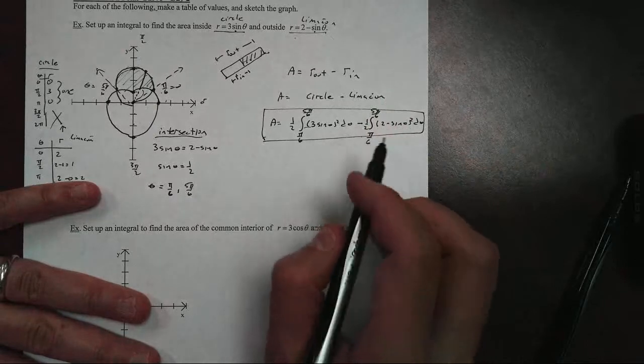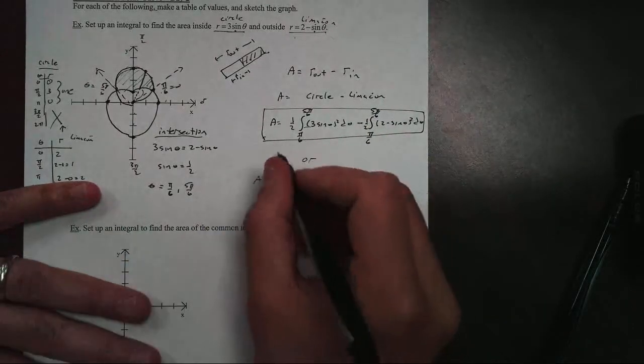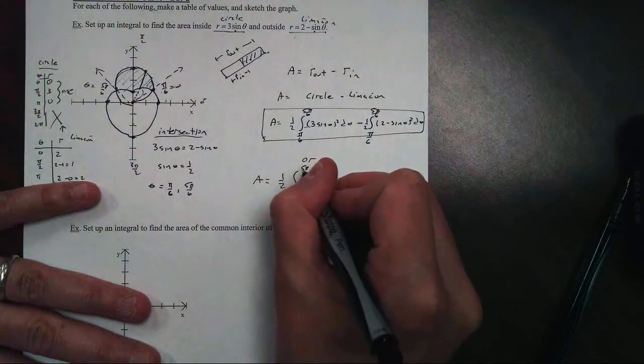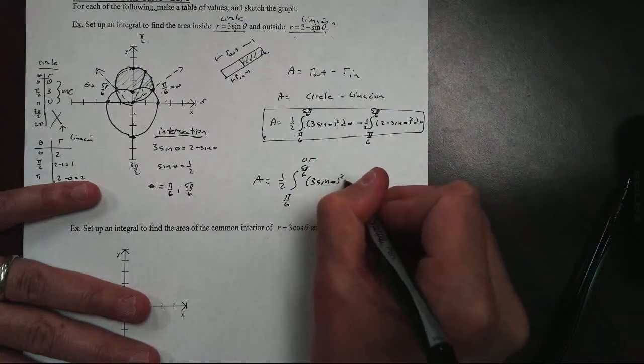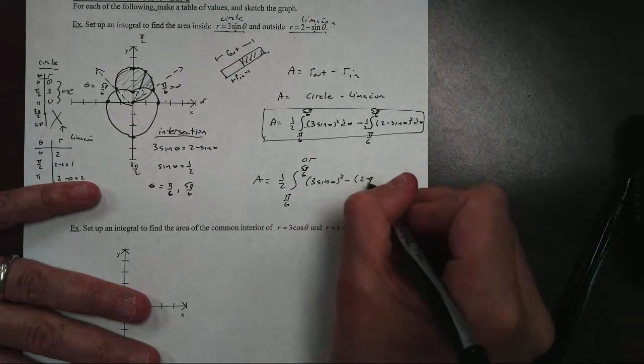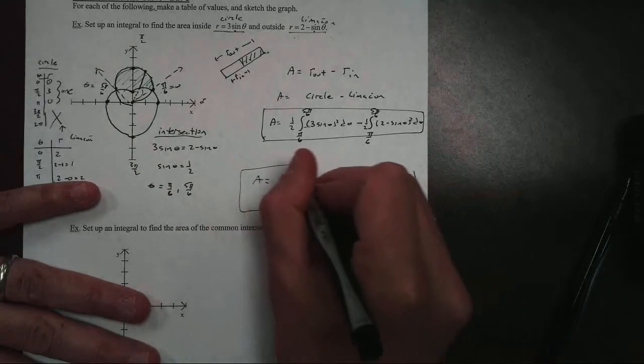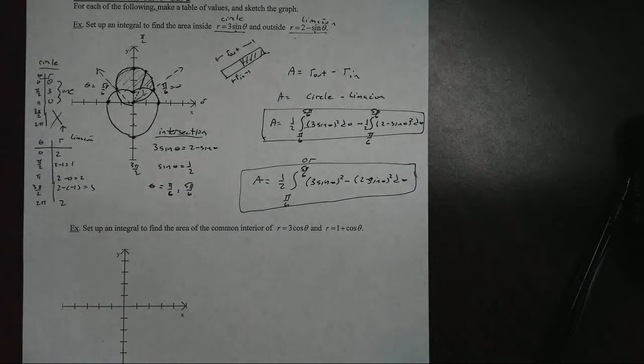Now you might be asking, because these have the same domain, could we write this as a single integral? And yes, you can in this case. I can go one-half pi over six to five pi over six, three sine of theta squared minus two minus sine of theta squared d theta. So I can write it as a single integral as well. That's kind of a tough one right there.